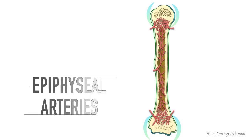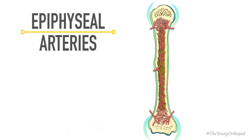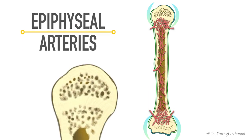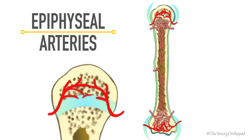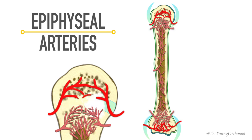Epiphyseal arteries are derived from periarticular vascular arcades. The epiphysis has openings that permit passage of a large number of vessels in and out. In children, the epiphyseal vessels are separated from the metaphyseal vessels due to the presence of the epiphyseal plate. In adults, the metaphysis and the epiphysis are fused together following the arrest of the growth cartilage, and the epiphyseal arteries freely anastomose with metaphyseal and nutrient arteries.